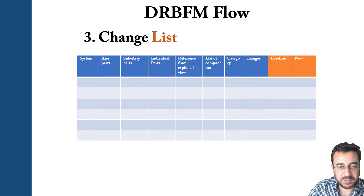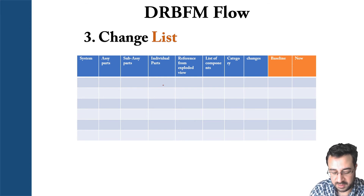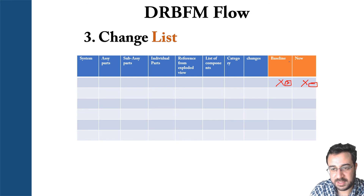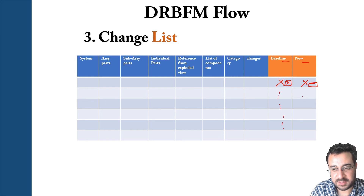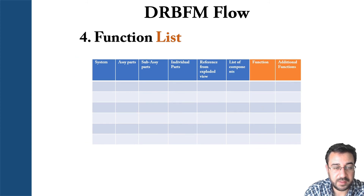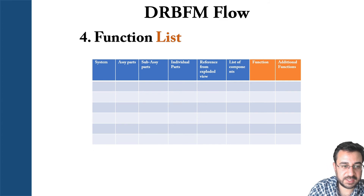Then you have the change list. You have system, assembly, and sub-assembly — this completes the hierarchy diagram. You have category changes, so you include your baseline and new design drawings with dimensions to show the difference between them. You move forward through the list until complete, so you can capture all the changes that happened and why they happened.